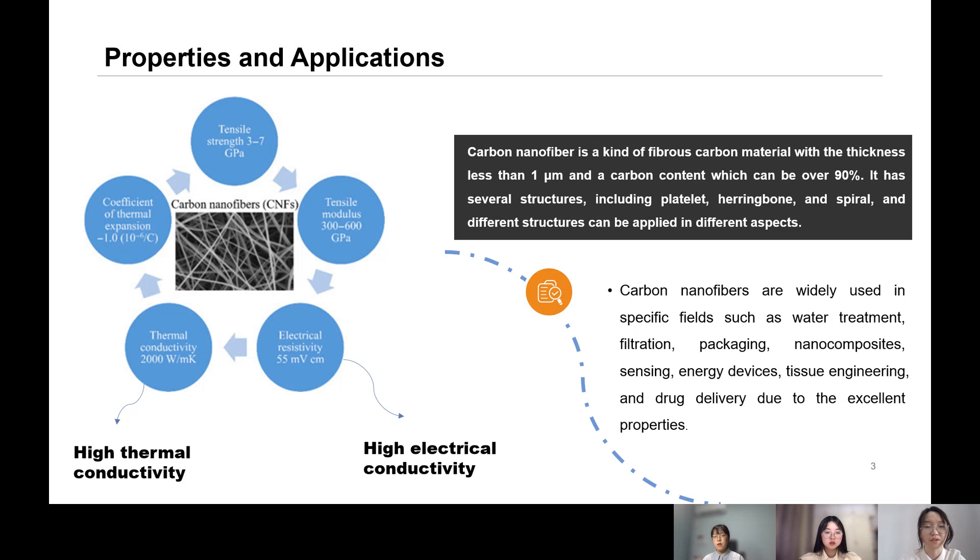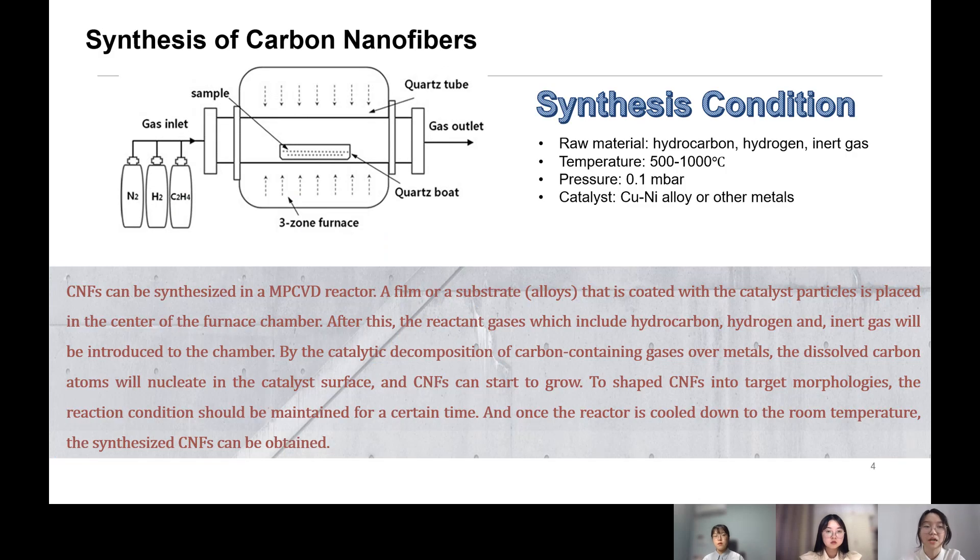These fields include water treatment, sensing, tissue engineering, and drug delivery. So how to produce this kind of material? In general, there are many methods, but the CVD method, which is chemical vapor deposition, can be the most commonly used one because this method is easy to scale up for production industry.